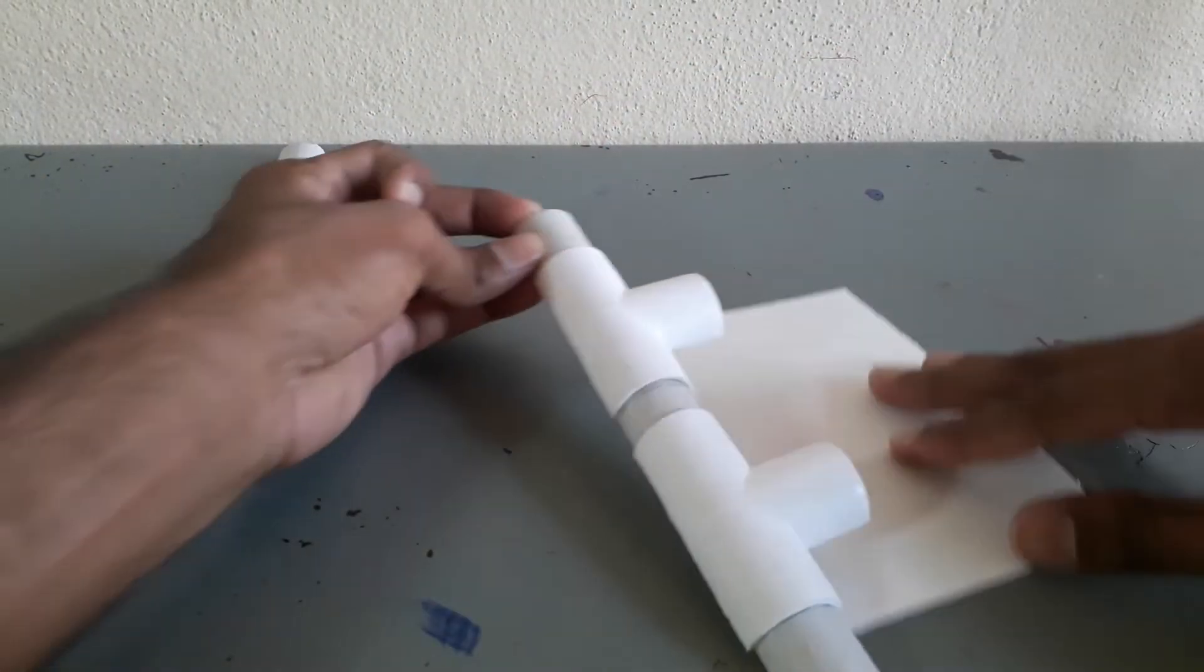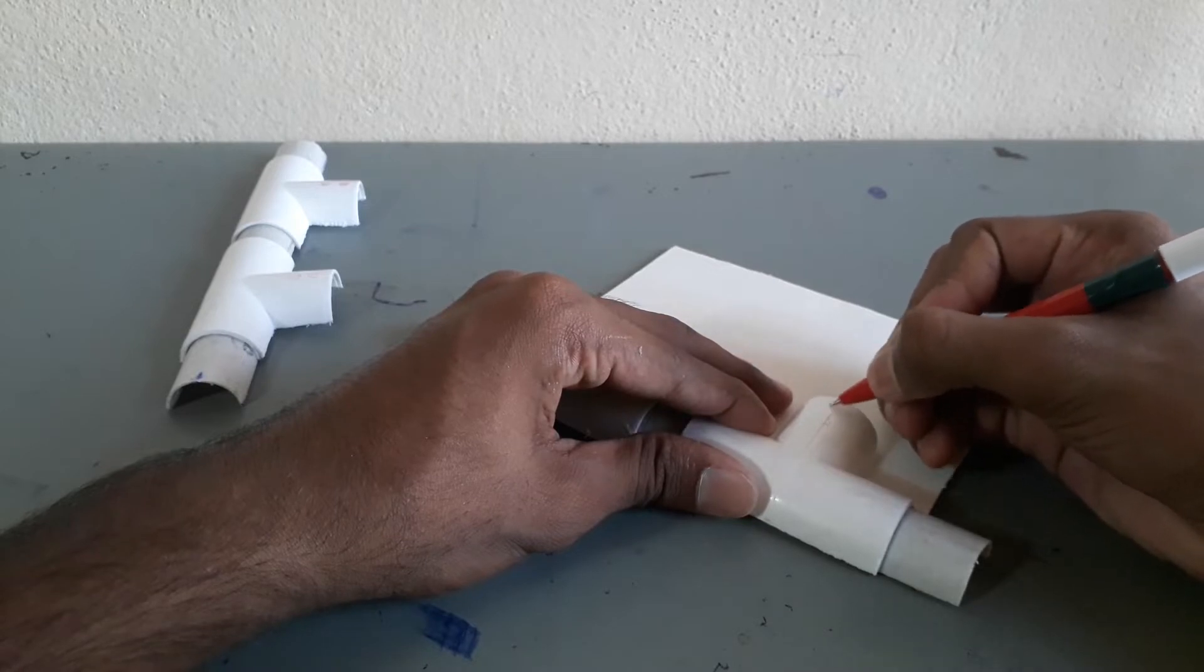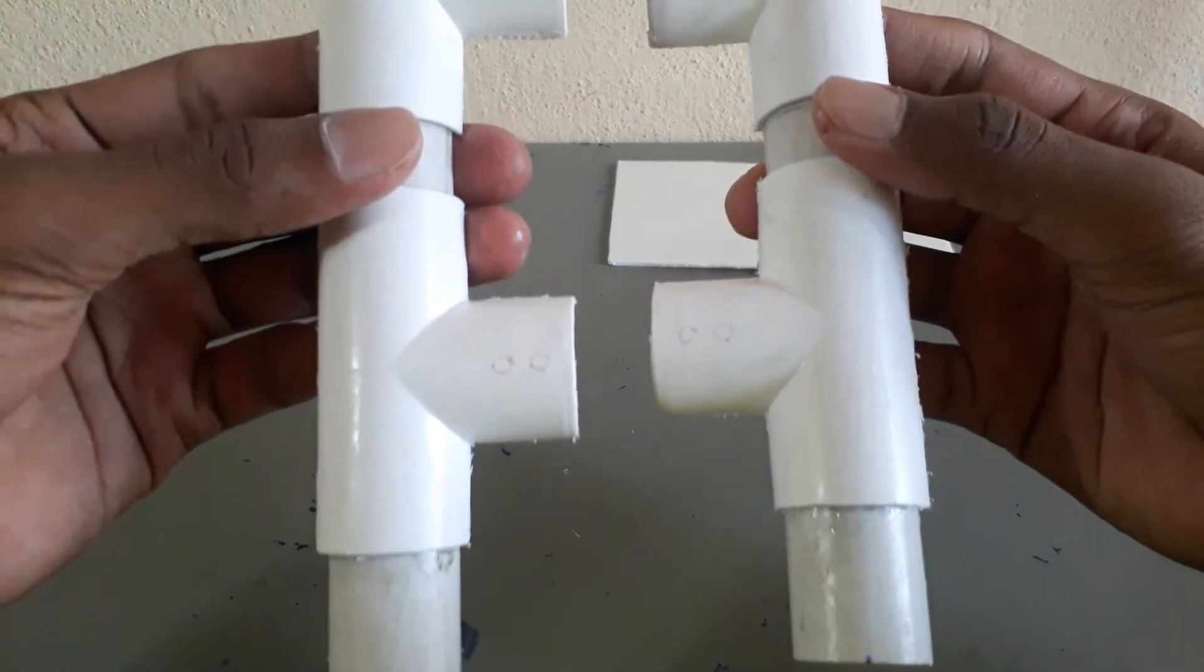Our next task is to fix a plastic plate. Make some holes to tie it using binding wires.